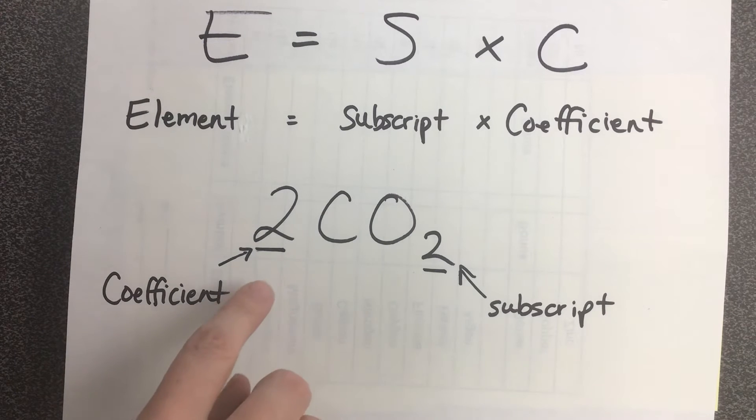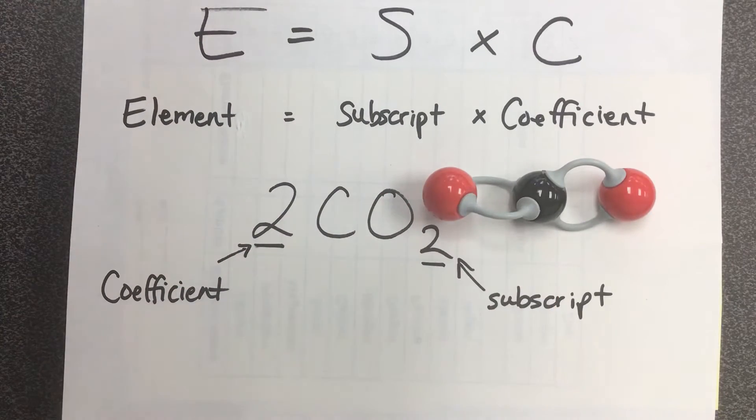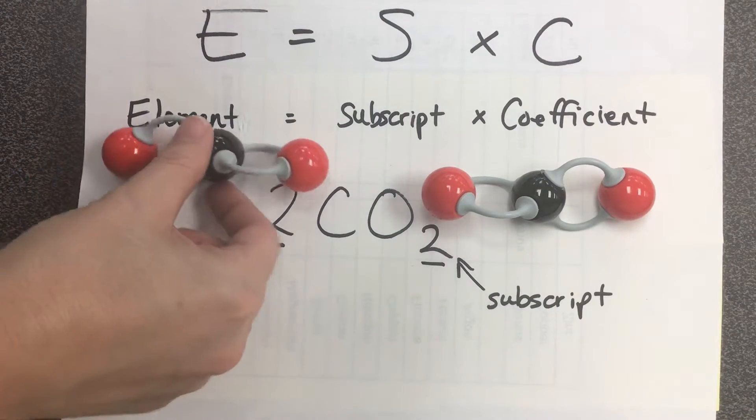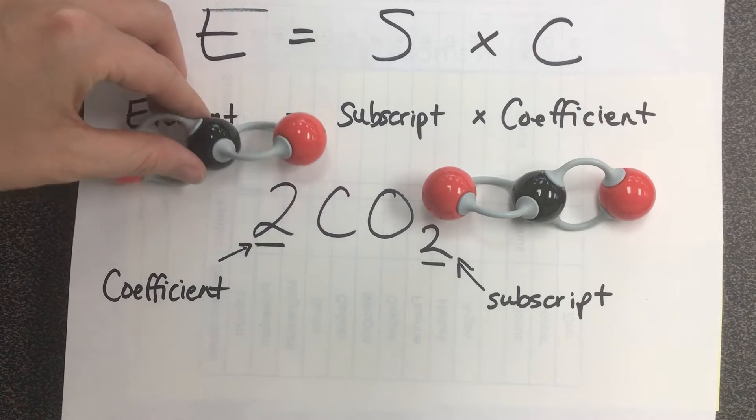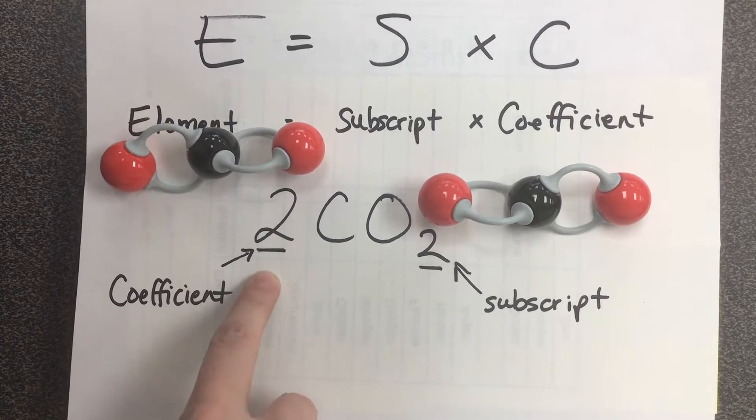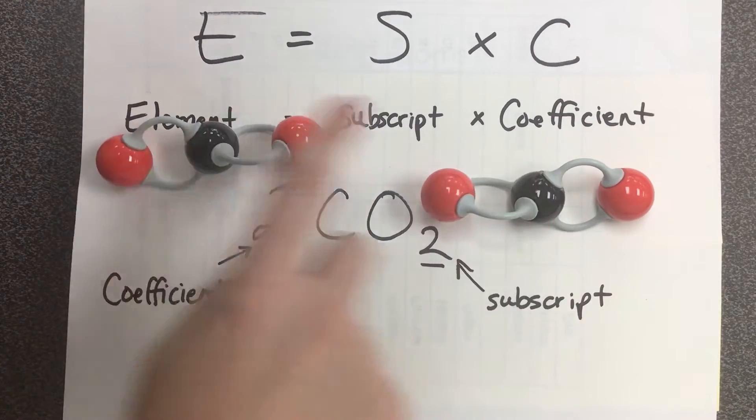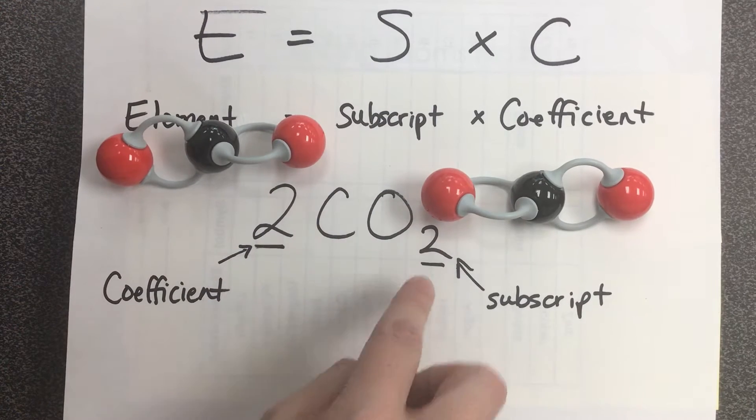So this is a chemical formula 2CO2, and what this represents is two carbon dioxide molecules. The two at the beginning of this is called the coefficient. That represents that there are one, two carbon dioxide molecules.